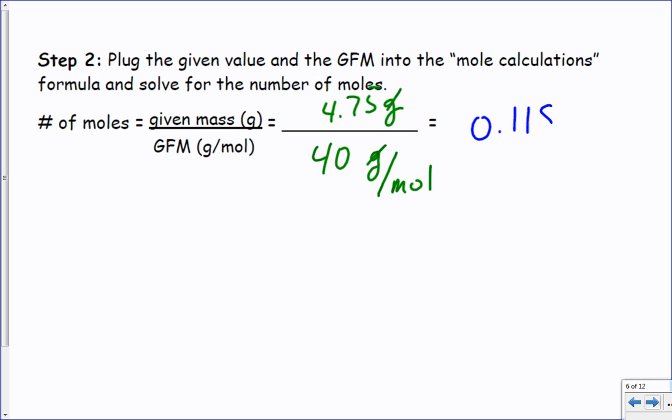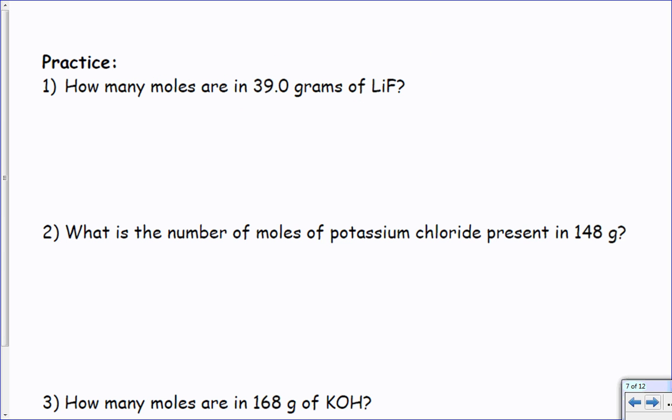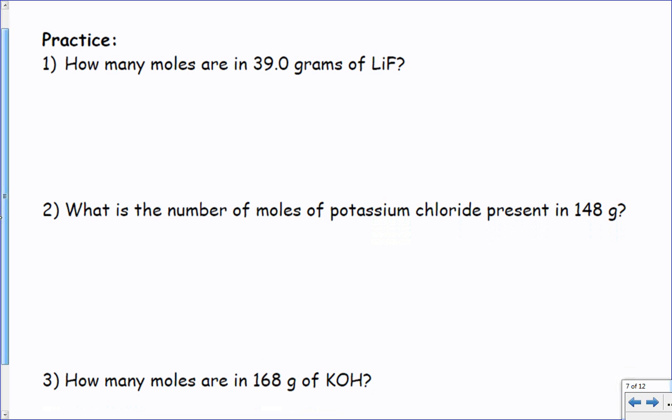4.75 divided by 40 grams per mole is 0.11875 moles, or I could round that up and say it's 0.12 moles. The shortcut for moles is mol even though the correct spelling is moles, but you'll see I do mol without the E all the time.